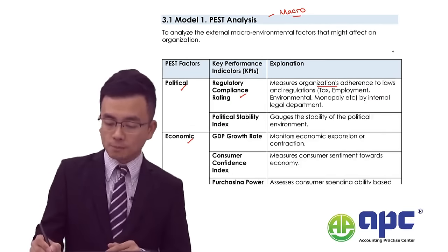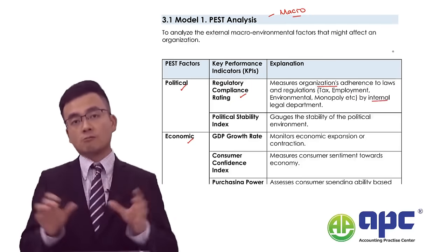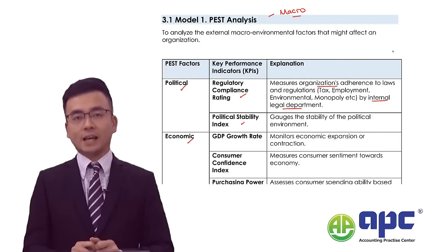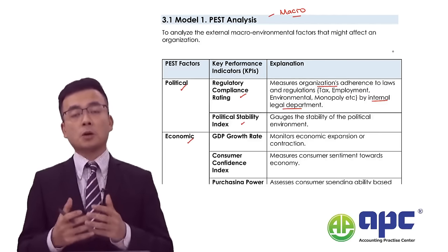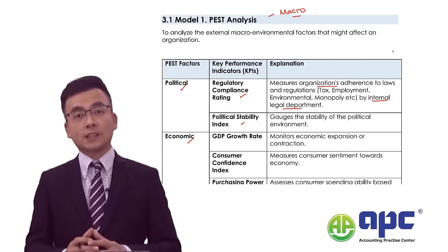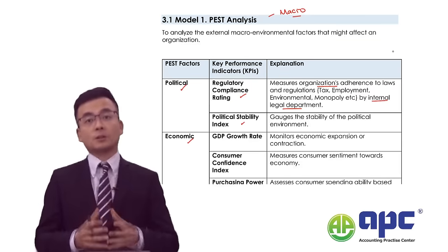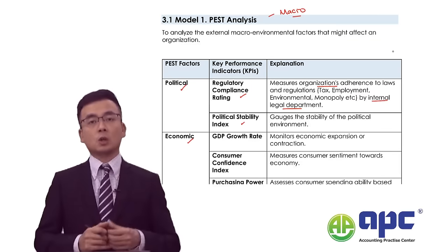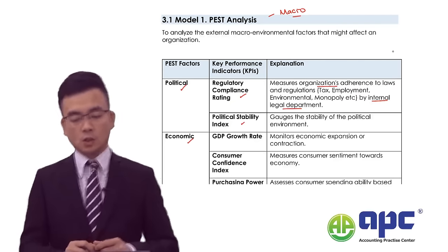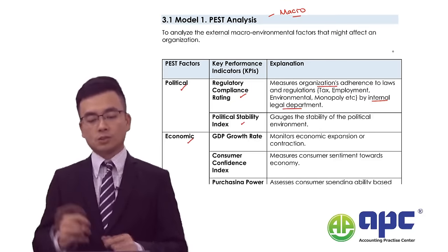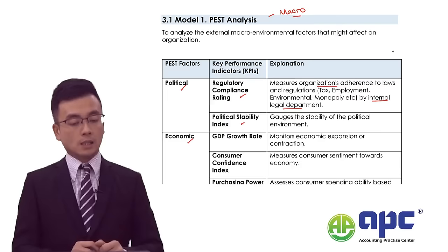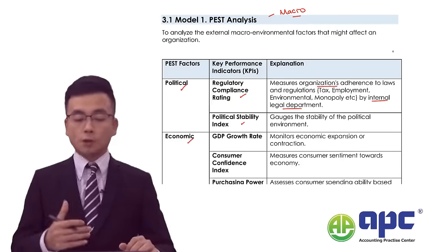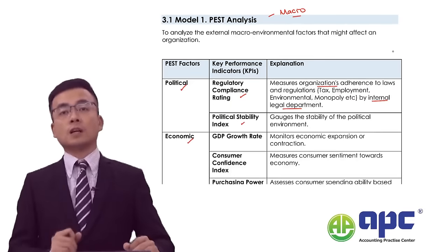Usually this will be done by the internal legal department to rate us. Second, we can also assess the political stability index — it's particularly important to keep an eye on the stability of the government. Any particular policies introduced by governments, for example taxation policies, subsidies, and so on, we can get the latest updates. The political stability index will be very important and can be checked on the internet.